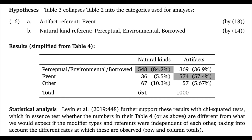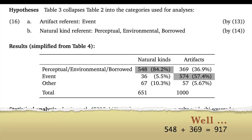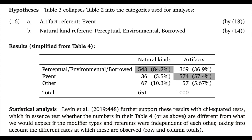The paper includes a nice statistical analysis of these results to further bolster the picture. We're not going to discuss this in detail because it would be a distraction. The essence of it is that they use chi-squared tests to understand whether the numbers in this table are different from what you would expect by chance, including the fact that the distribution of items is uneven across the categories. Essentially, we test whether a number like 548 is larger than expected given 651 natural kinds and roughly 1,000 perceptual, environmental, or borrowed modifiers. The results confirm these numbers are oversized relative to the null hypothesis, which supports our overarching hypotheses.